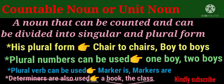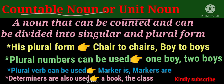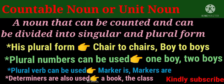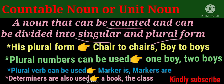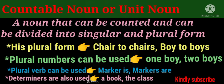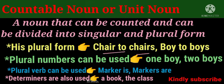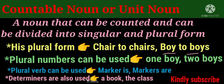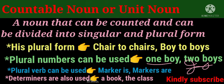A countable noun is a noun that we can count. We can divide it into singular and plural forms: chair, chairs; boy, boys. Plural numbers can be used, for example: one boy and twenty boys.